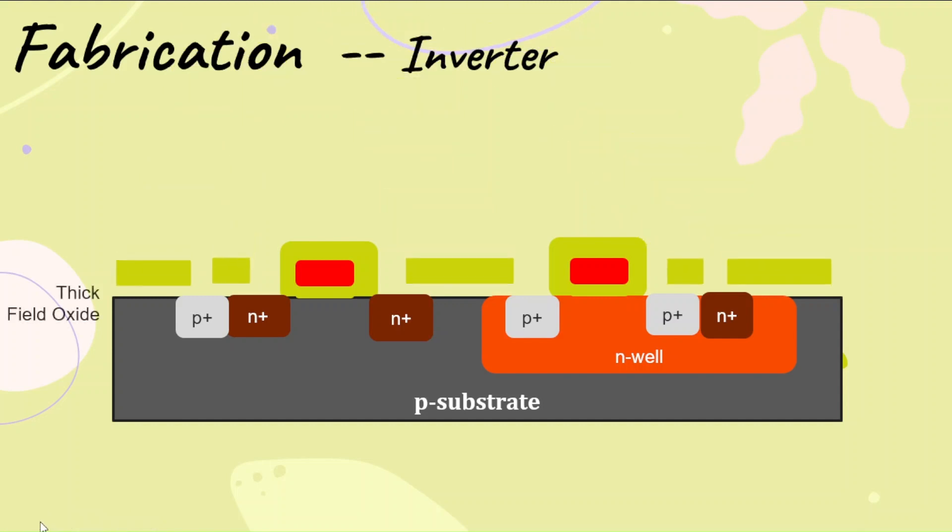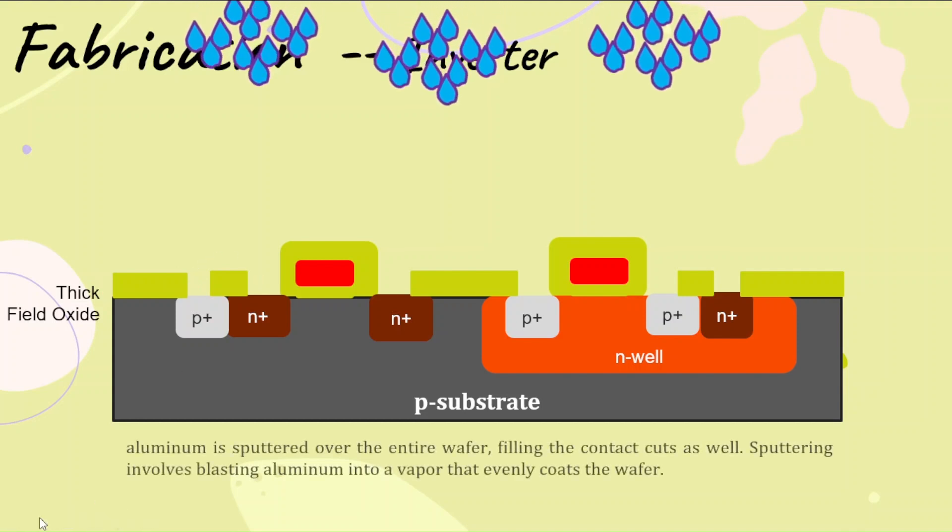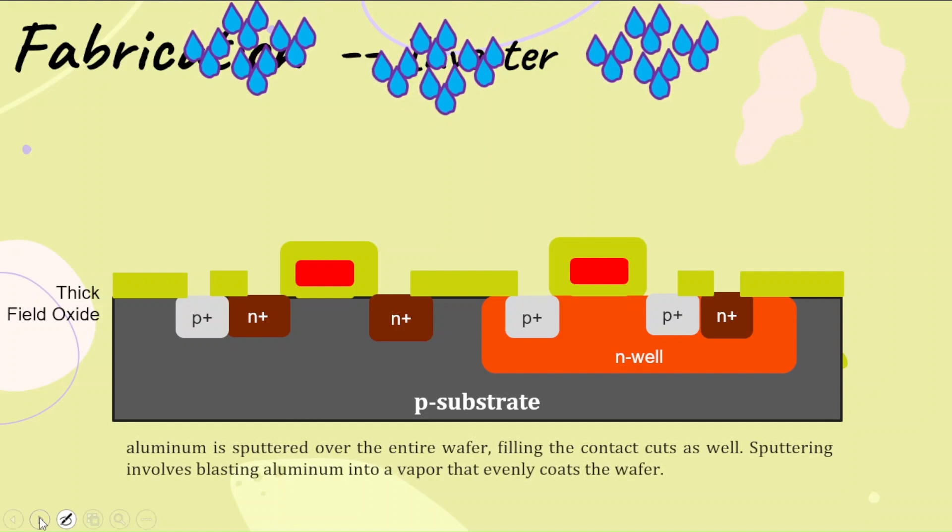Now, almost four masks are done. Next, the fifth one is to make contact cuts, where a thicker oxide layer is deposited. This thick oxide creates contact cuts wherever you need the metal to be poured or wherever the connection is to be formed. The last one is sputtering or aluminum deposition.